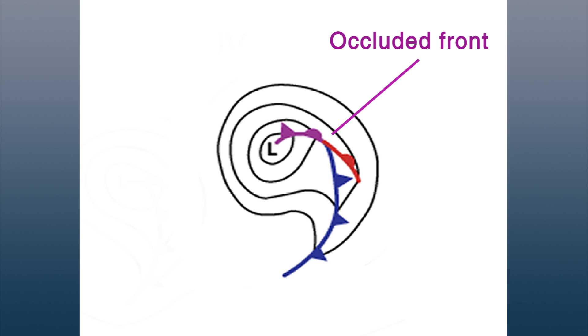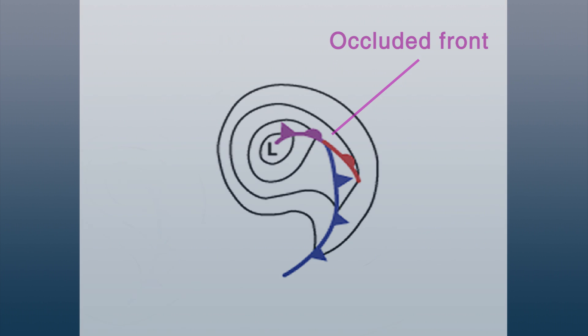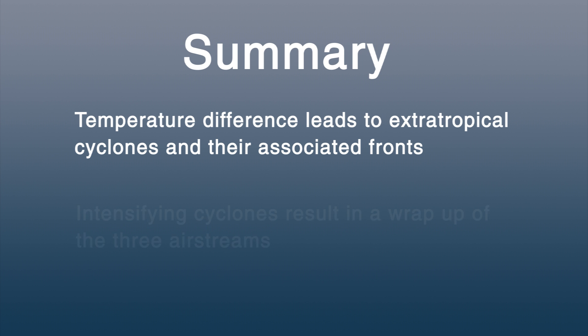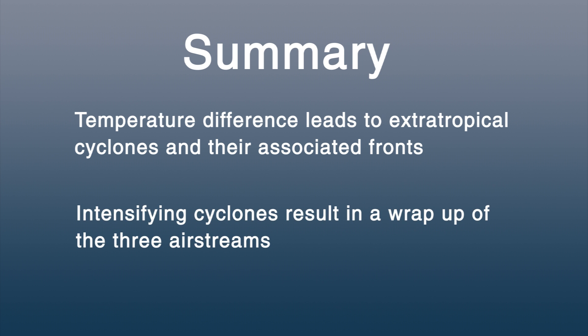So to summarize, an extratropical cyclone forms as a result of the temperature gradient that exists between the poles and the equator. That is why fronts are such an important part of their structure and their evolution. As the cyclone intensifies and the circulation about it becomes stronger, the airstreams flowing through the storm get increasingly wrapped up into the circulation.